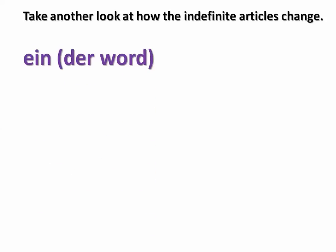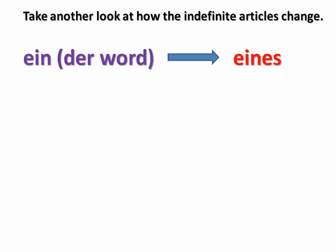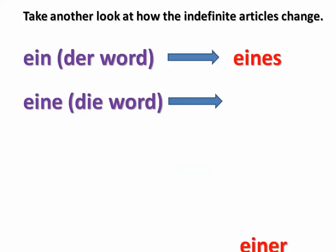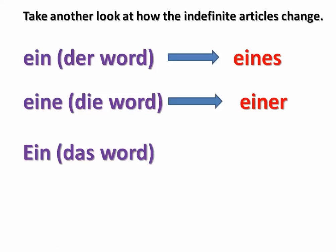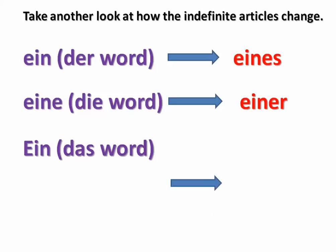Let's take a look at the indefinite articles. 'Ein' for a masculine noun will change to 'eines.' 'Eine' for a feminine noun will change to 'einer.' And 'ein' for a neuter noun will also change to 'eines.'